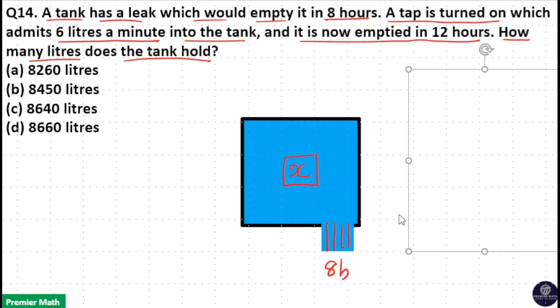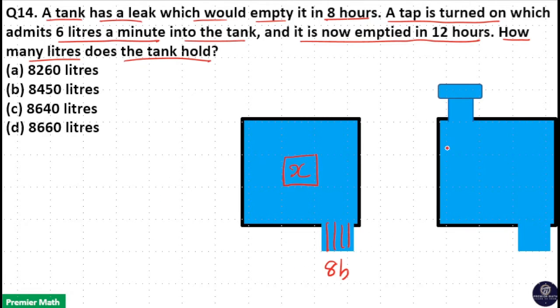Now a pipe is turned on in this tank and this pipe will fill 6 liters of water in a minute into this tank. So in a minute, 6 liter is filling means in 1 hour, 6 times 60, 360 liter of water is filling by this pipe into this tank.